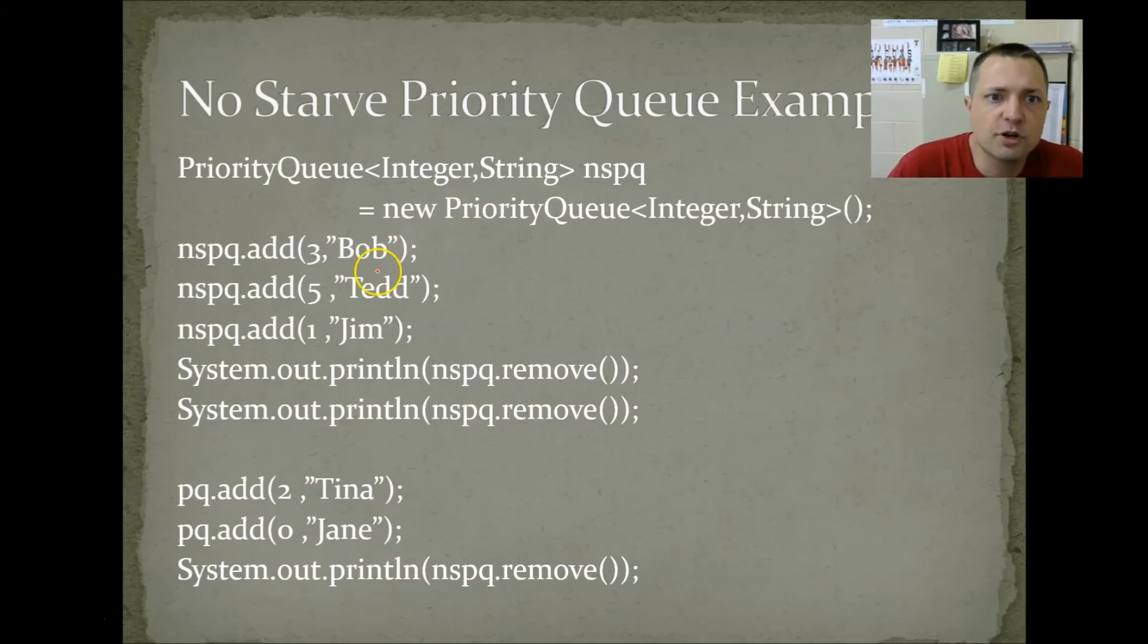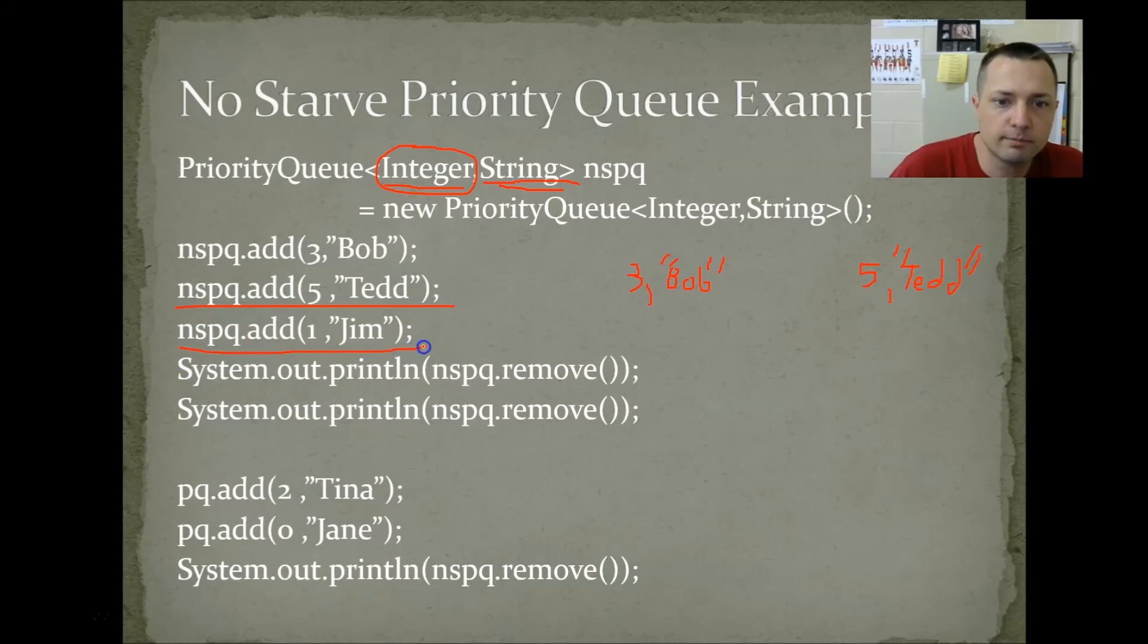A no-starve priority queue. In a no-starve priority queue, I like to create priority queues that store 2 elements, or priority nodes is what I would call them. It stores both an integer and a string. For this example, the integer is going to be the priority, where the string is going to be the data. So if I add 3, Bob, I would get 3, Bob. Now if I add 5, Ted, way over here, we would have 5, Ted. 5, Ted is way after 3, Bob. If I added 1, Jim, it would be over here. 1, Jim. Now if I wanted to remove something, the thing with the lowest priority is Jim. So when I remove, I get Jim. But here's the cool part about the priority queue. This guy just got passed up. He didn't like that.